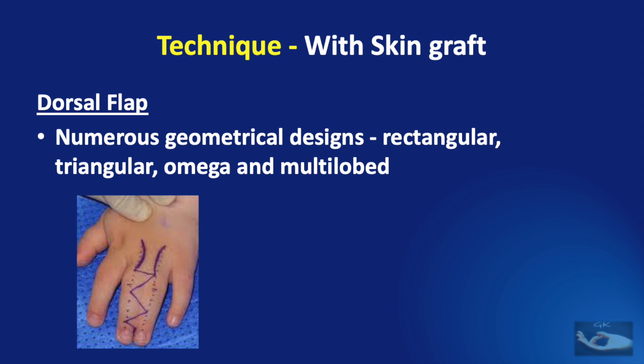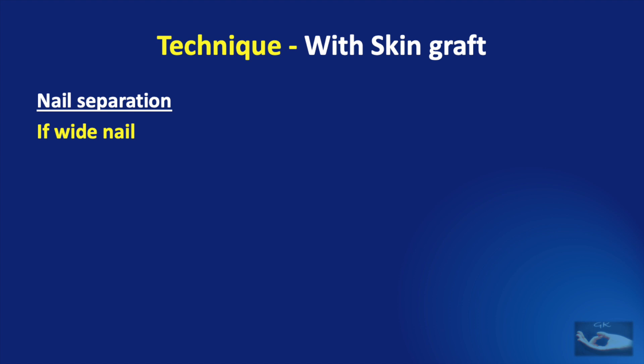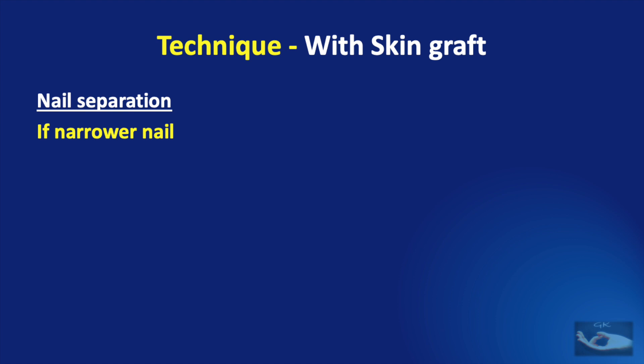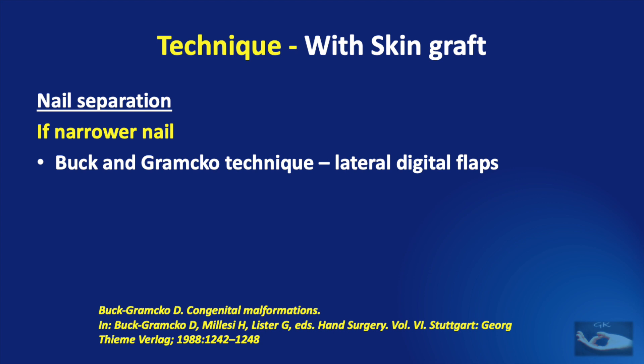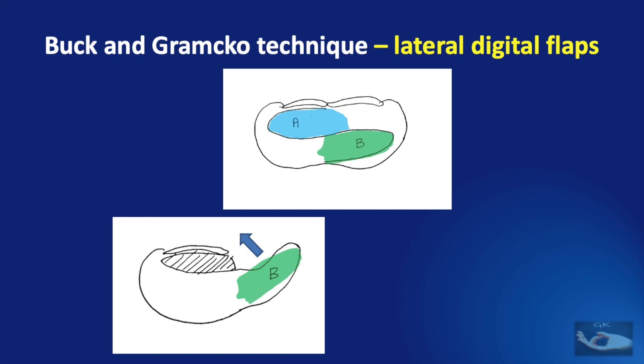The next important technique is the separation of fused nails. If the nail is wide, excision of the central portion of the nail and primary closure with laterally based triangular flaps rotated is performed. If the fused nails are narrower, the Buck-Gramco technique of using lateral digital flaps can be used. These lateral digital flaps are taken from the tip of the fingers to reconstruct the soft tissue on either side of the released nail complex and terminal phalanx bones. Flap B resurfaces one side of the finger and flap A resurfaces the contiguous surface of the released finger.